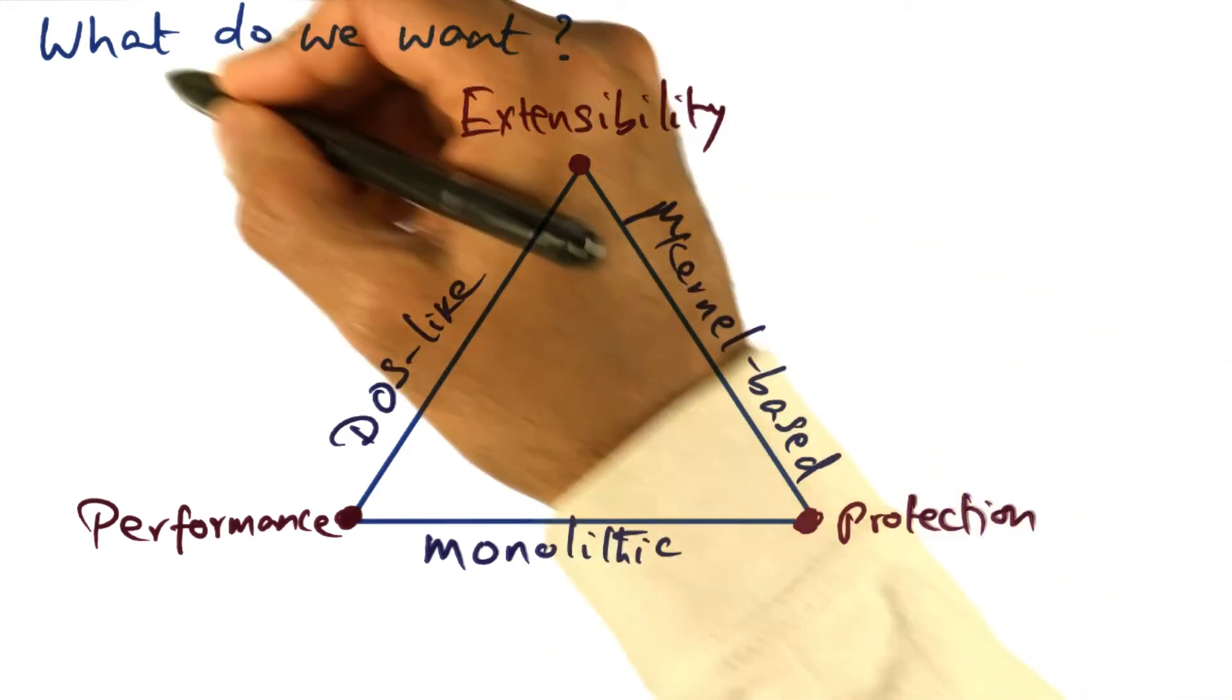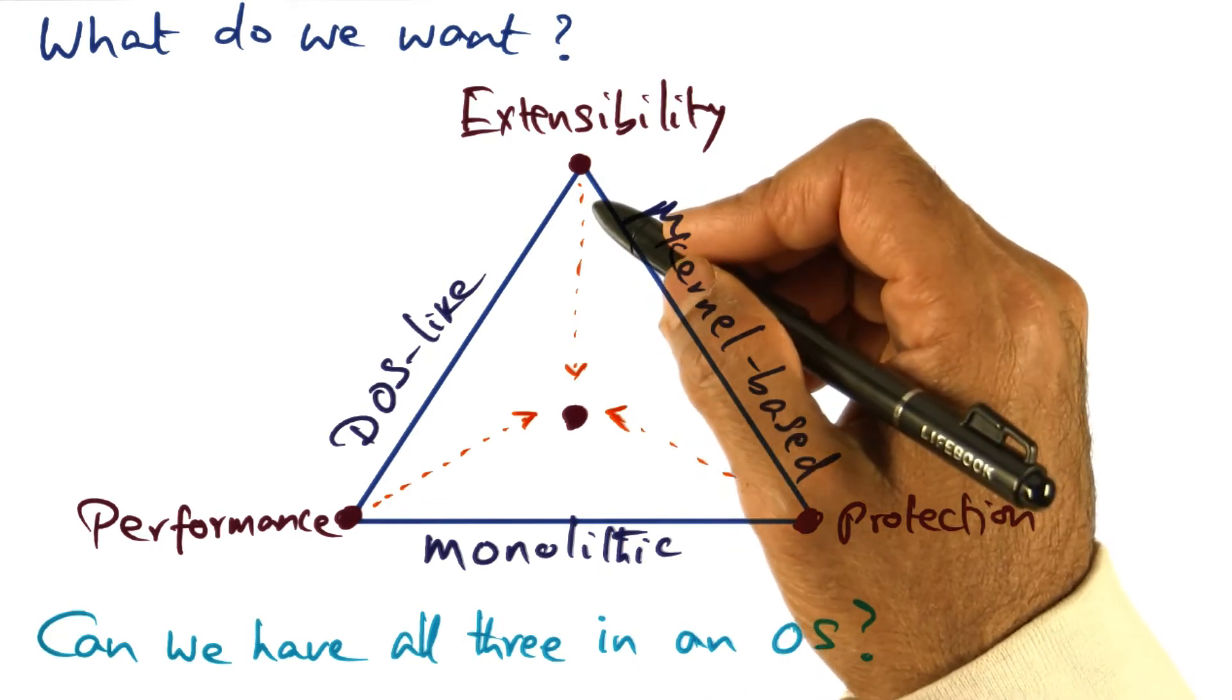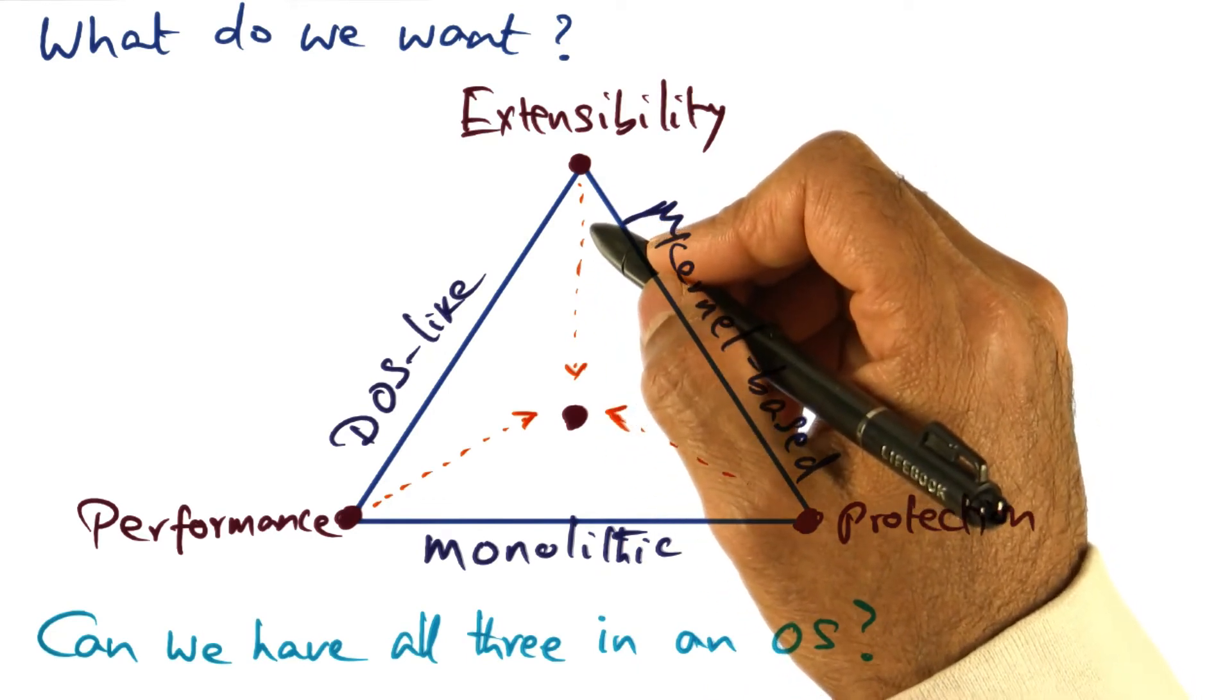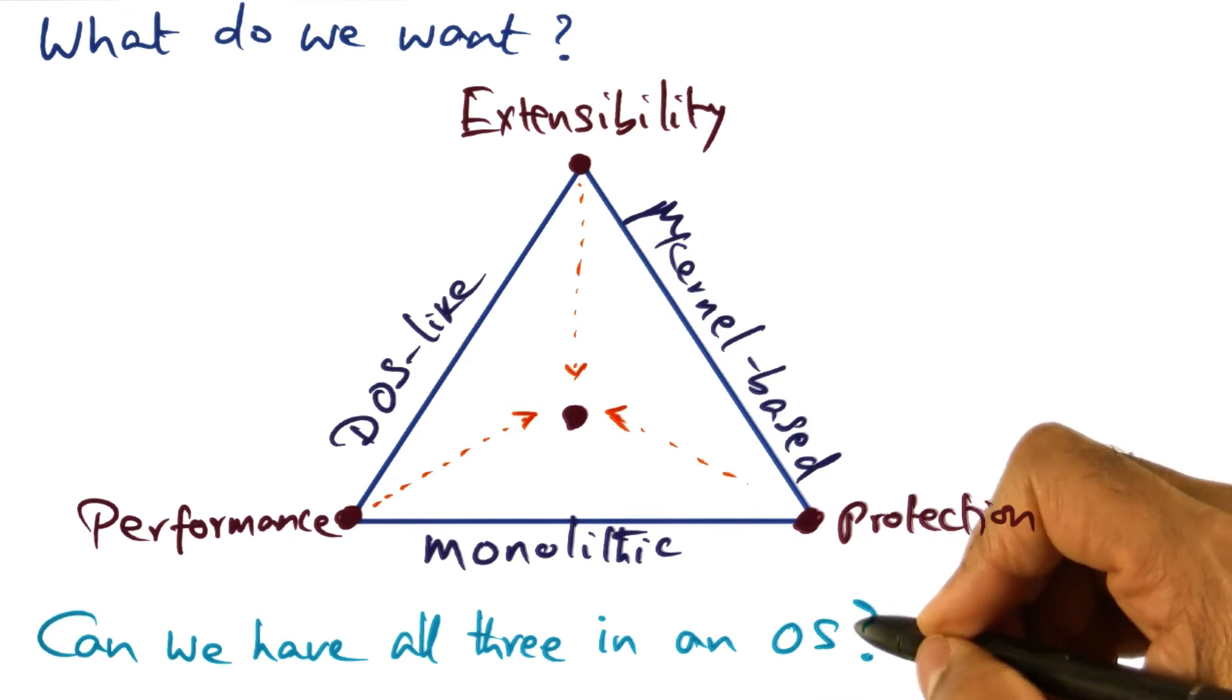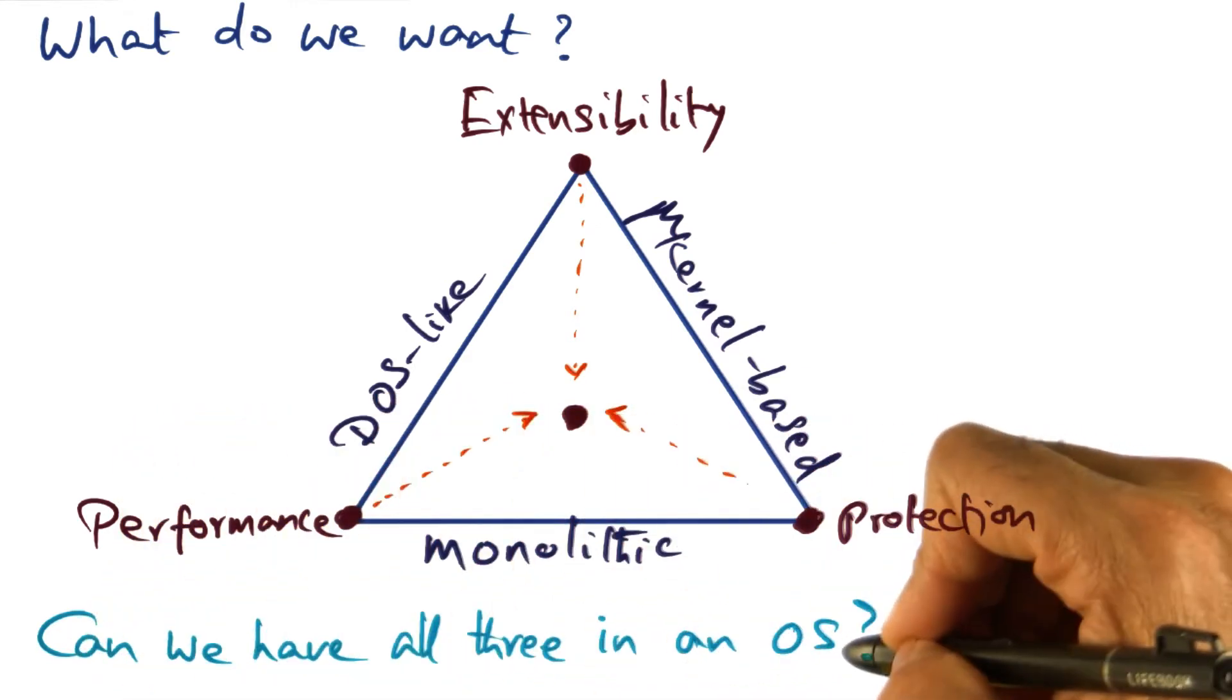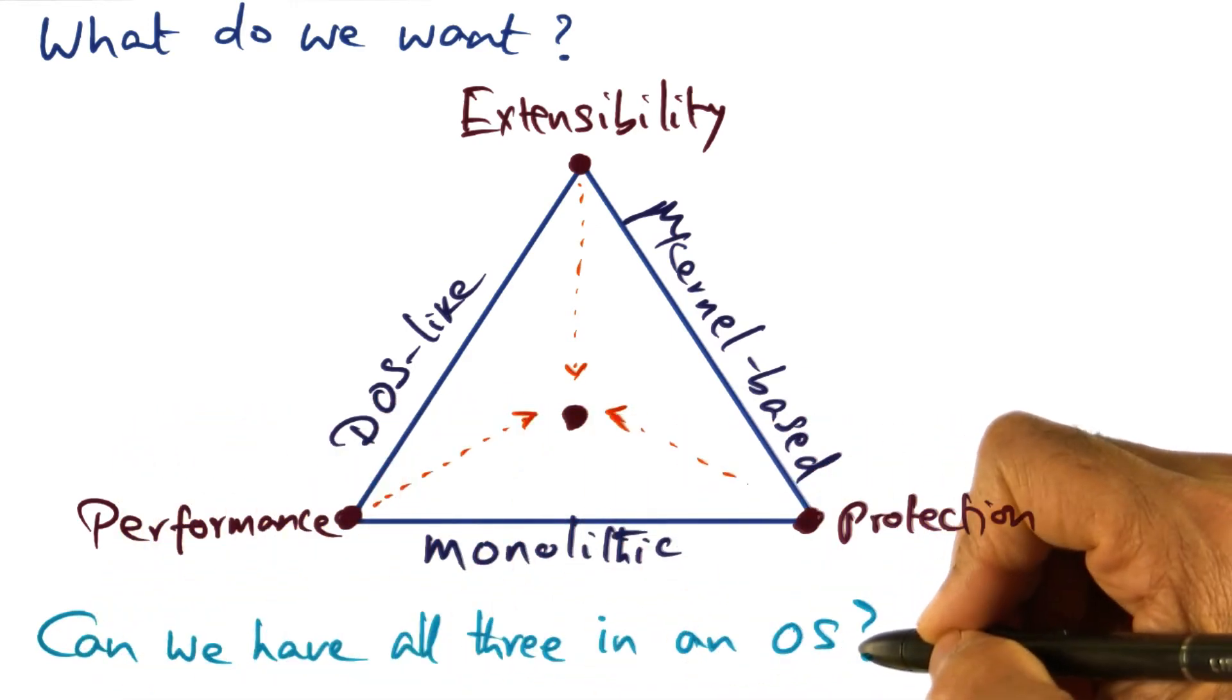Now what do we want? Of course we want all three of these characteristics in an operating system structure, but can we have all of these three characteristics in an operating system?